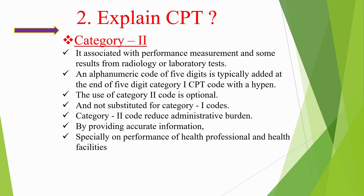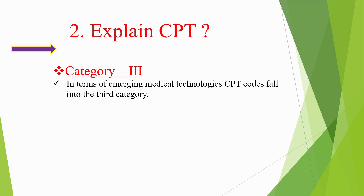Category II is associated with performance measurement and some results from radiology or laboratory tests. An alphanumeric code of five digits is typically added at the end of the five-digit Category I CPT code with a hyphen. The use of Category II codes is optional and not substituted for Category I codes. Category II codes reduce administrative burden by providing accurate information, especially on performance of health professionals and health facilities. Category III covers emerging medical technologies.